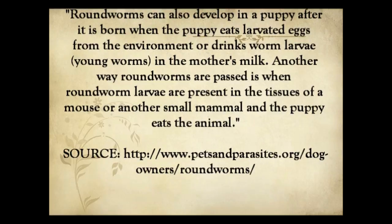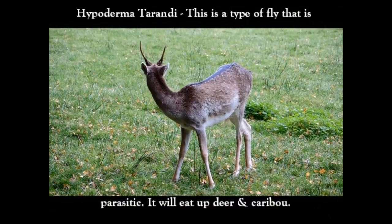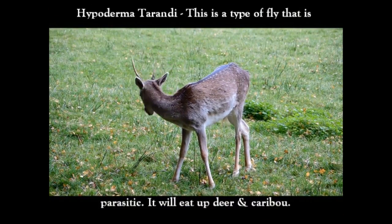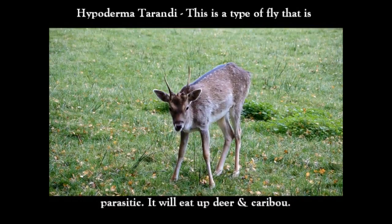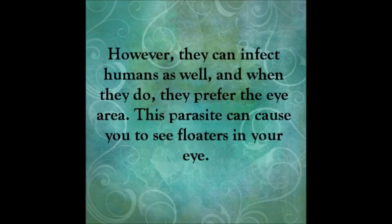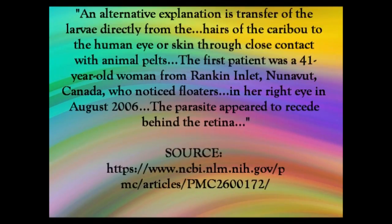Next is Hypoderma tarandi, a type of parasitic fly that loves to feed on deer and caribou. Once they enter humans, they tend to go for the eye area and can cause you to see floaters. You can get them by coming into direct contact with larvae found on the hairs of deer or caribou. These contaminated hairs can enter your eyes if you are around animal pelts or when skinning an animal.